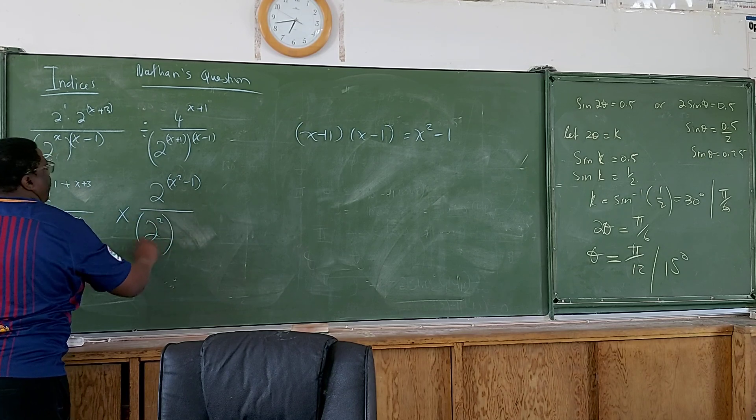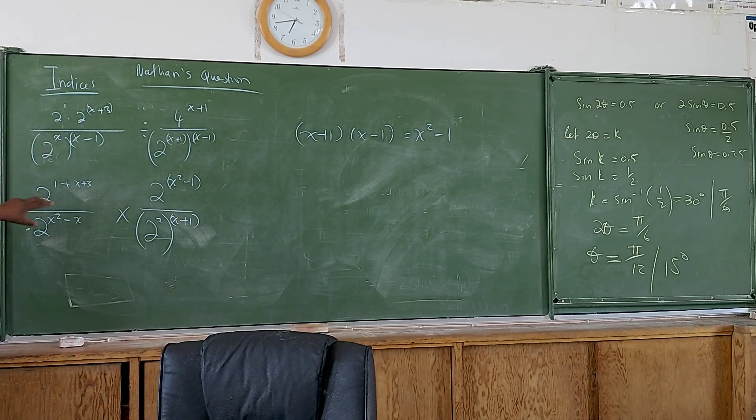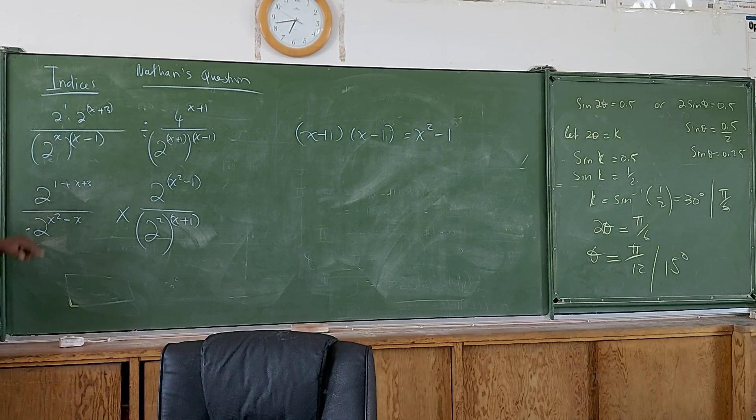All over, this 4 is now 2 squared raised to the power of x plus 1. Put that in the brackets. I'm going to simplify it, clean this up here. Alright.